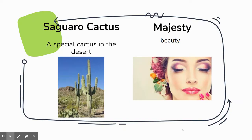The saguaro cactus is a special cactus in the desert, and your story is going to talk about that. Majesty just means beauty. When that word pops up, remember it means something that's beautiful.